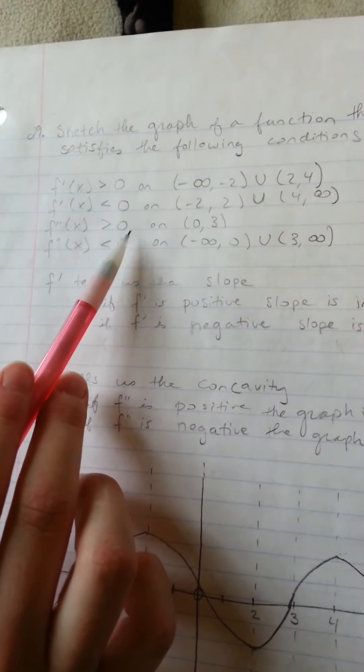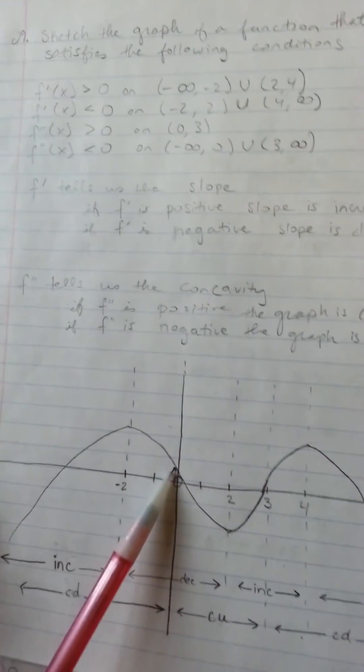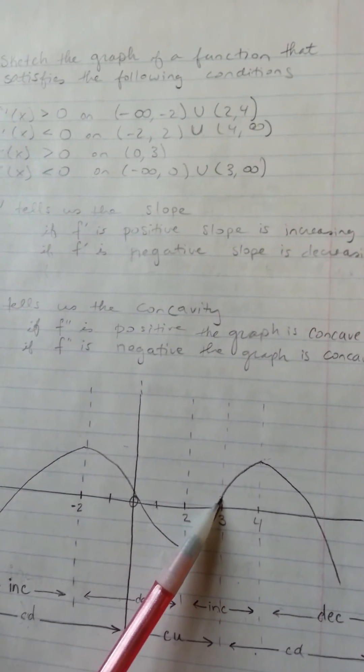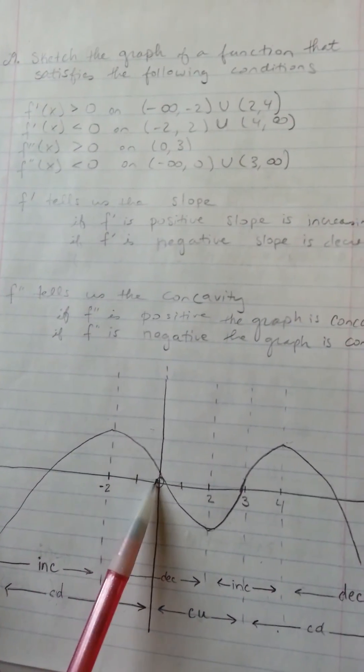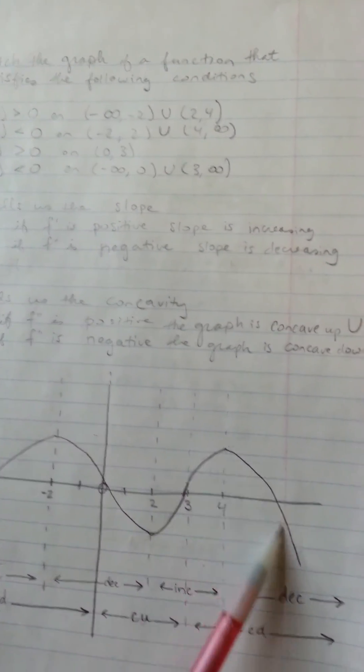The graph is going to be concave up from 0 to 3, and it's going to be concave down from negative infinity to 0, and also from 3 to infinity.